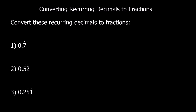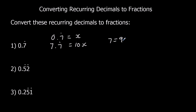Okay, try these questions — pause the video, and I'll go through the answers afterwards. The first one: 0.7 recurring. That's x. 7.7 recurring is 10x. So 7 equals 9x. Divide both sides by 9: x equals 7 ninths.